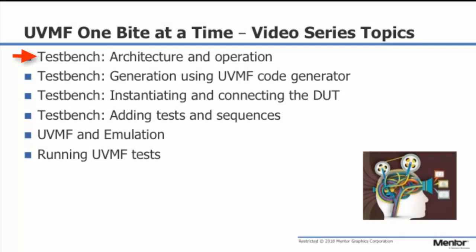The video on test bench architecture and operation defines what a test bench consists of within the UVM-F paradigm. It describes the various packages and top-level modules that are part of the test bench. The video on using the UVM-F test bench generator describes the constructs and flow used to generate a UVM-F-based test bench. The generated test bench is operational — a top-level virtual sequence is generated and started, which starts random sequences on each active agent. Typically, all that remains is to add the DUT to the test bench and start writing top-level virtual sequences that implement randomized and directed test scenarios.